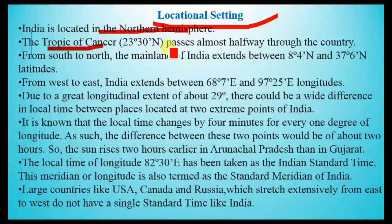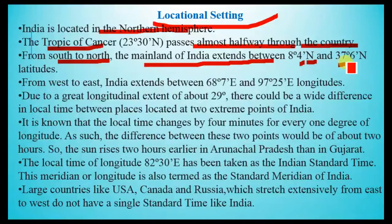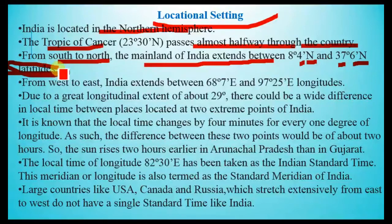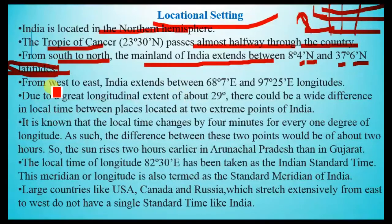Locationally, India is located in the Northern Hemisphere and the Tropic of Cancer passes almost halfway through the country from north to south. The mainland of India extends between 8°4' N and 37°6' N latitudes. Latitudes are the horizontal lines which are parallel to each other, and longitudes are the vertical lines.